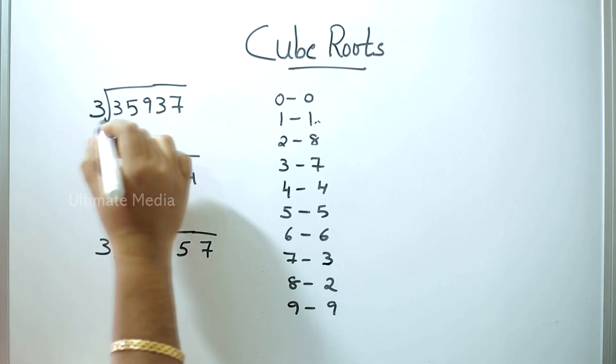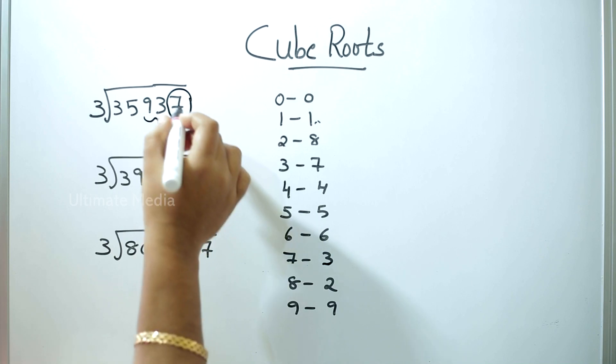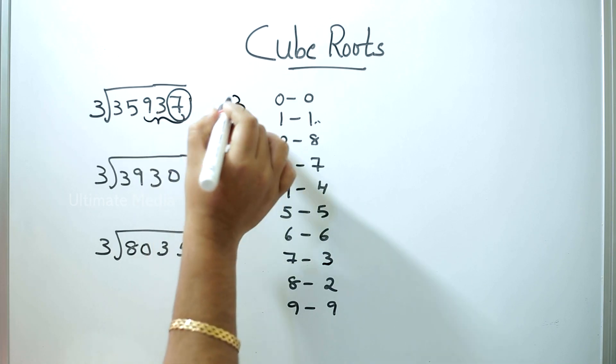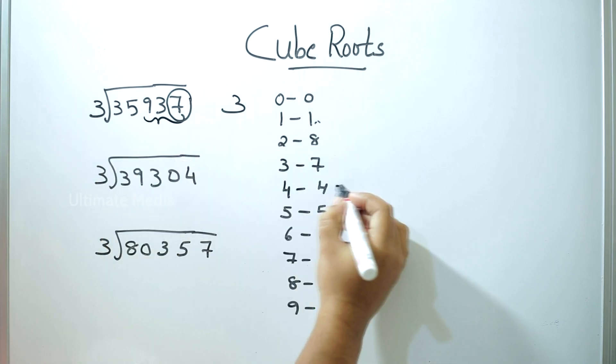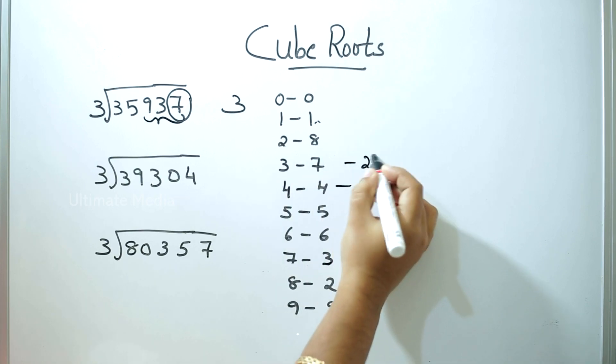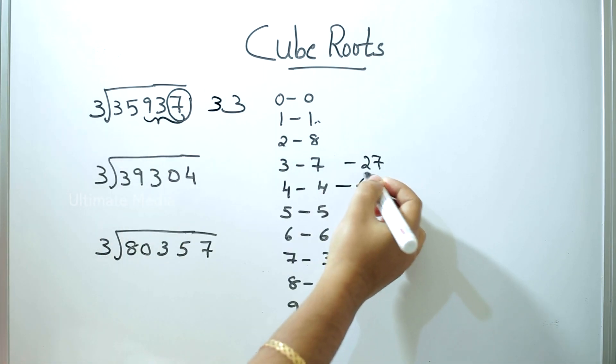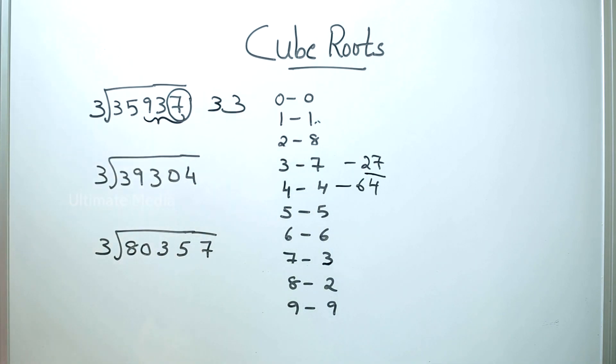This is the last 3-digit number. Last 7, I will say 3. Then 35, 4 cube is 64, then 3 cube is 27. It is the middle one. 33 cube is 35,937.